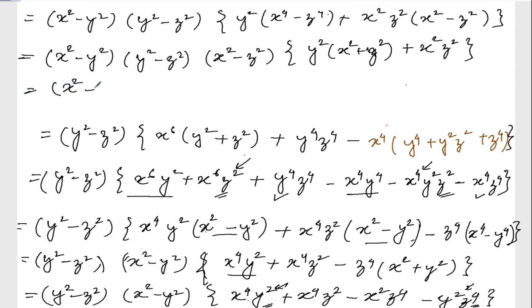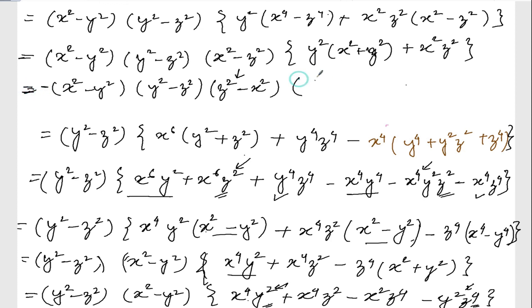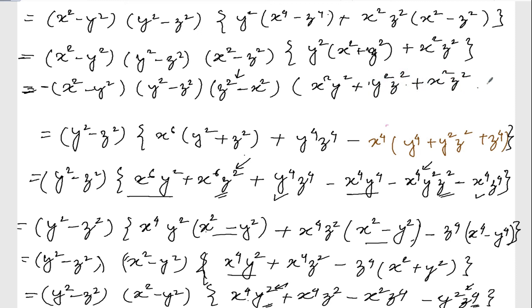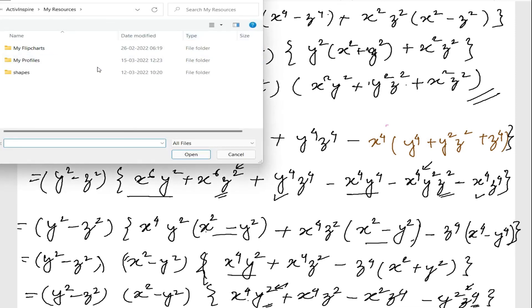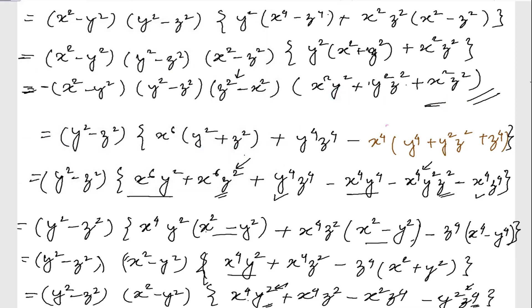So I can write this as x squared minus y squared, y squared minus z squared, and the book gives z squared minus x square — so write z squared minus x squared with a negative sign outside. Inside the bracket, the remaining expression is x squared y squared plus y squared z squared plus z squared x squared. That is your final answer. Thank you so much, we will meet in the next video.